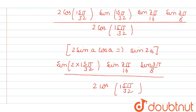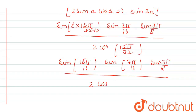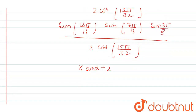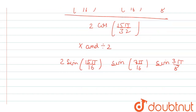Now in the numerator, the 2 cancels with 32 giving 16. So we get sin(15π/16)·sin(7π/16)·sin(3π/8) divided by cos(15π/32). Now we will try making another trigonometric formula by multiplying and dividing by 2. So our equation will become 2sin(15π/16)·sin(7π/16)·sin(3π/8) divided by 2cos(15π/32), giving 4cos(15π/32) in the denominator.